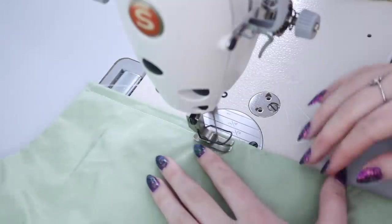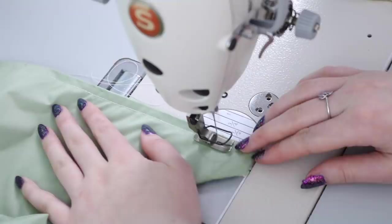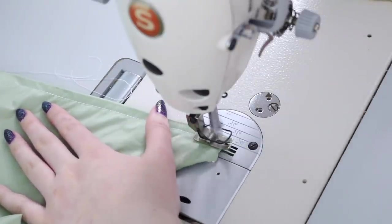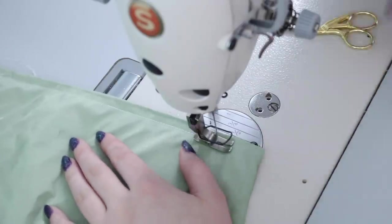Now I sewed boning channels into the front edges of the bodice by machine. And I lost the footage, but I added a single plastic bone to either side of the bodice. I think I actually ended up adding two pieces of boning to the back of the bodice as well, but I'm not sure where that footage went either.